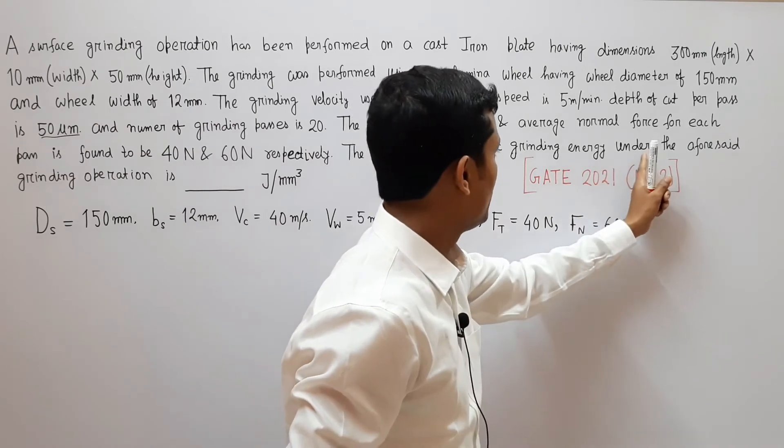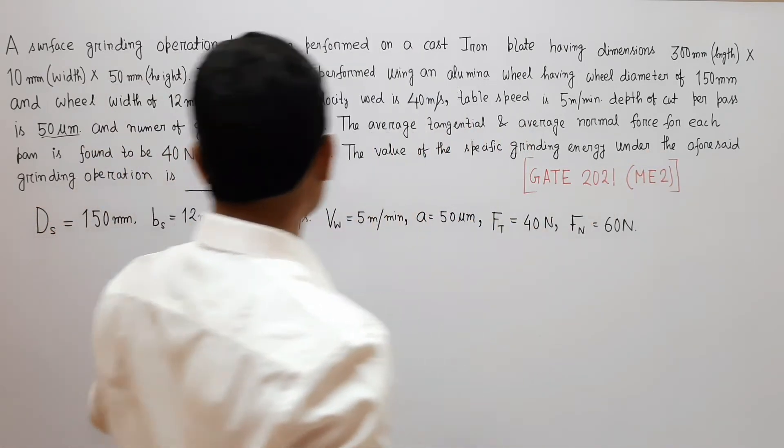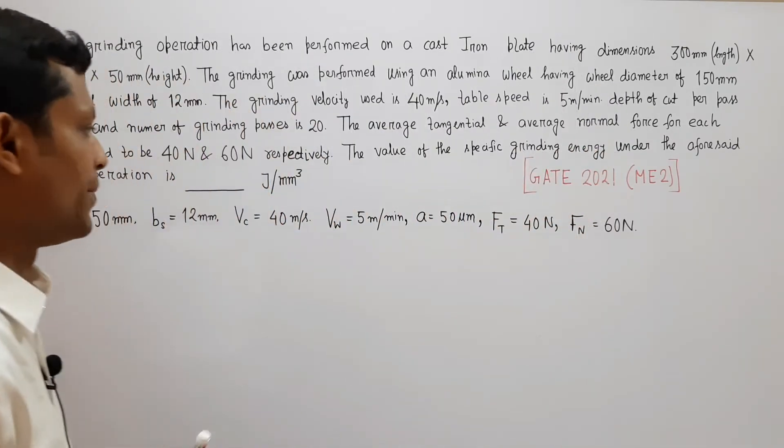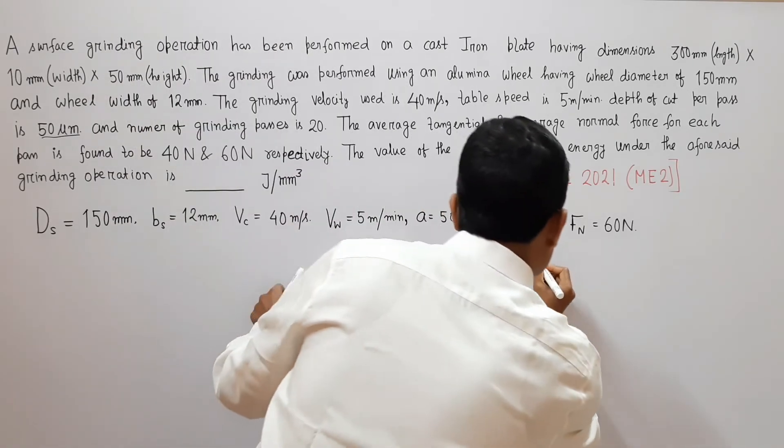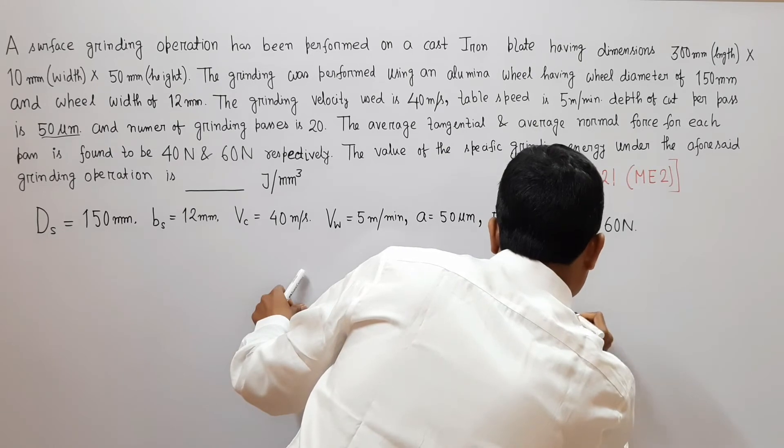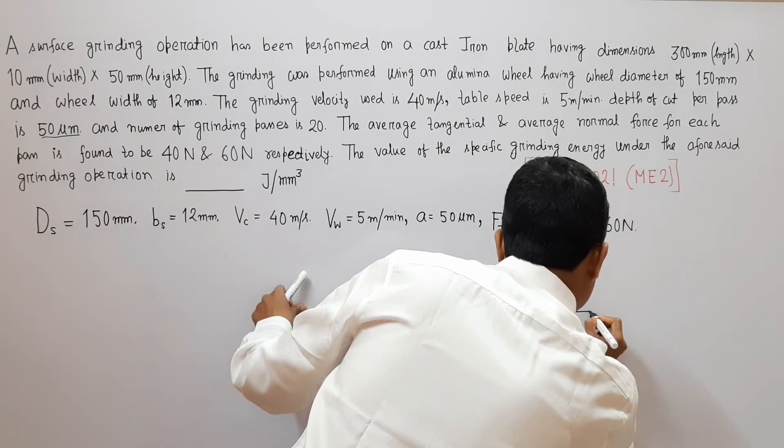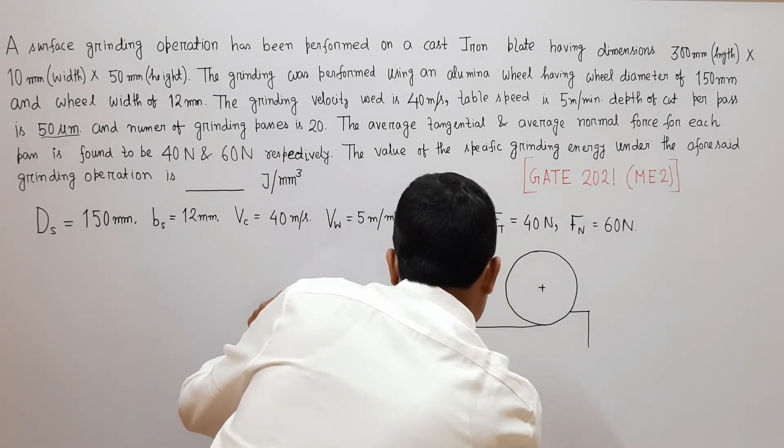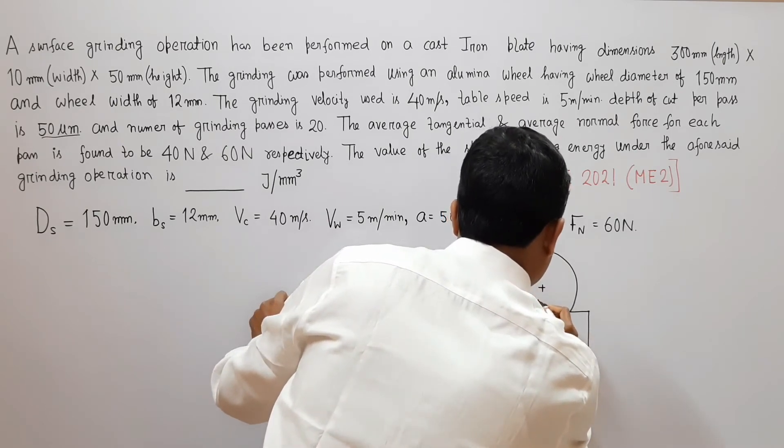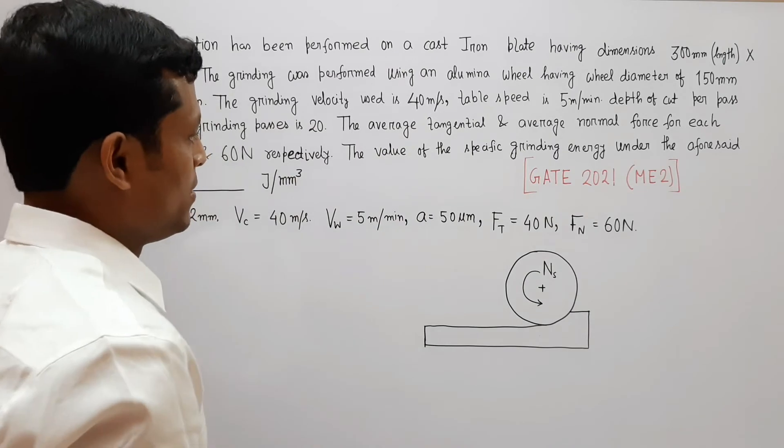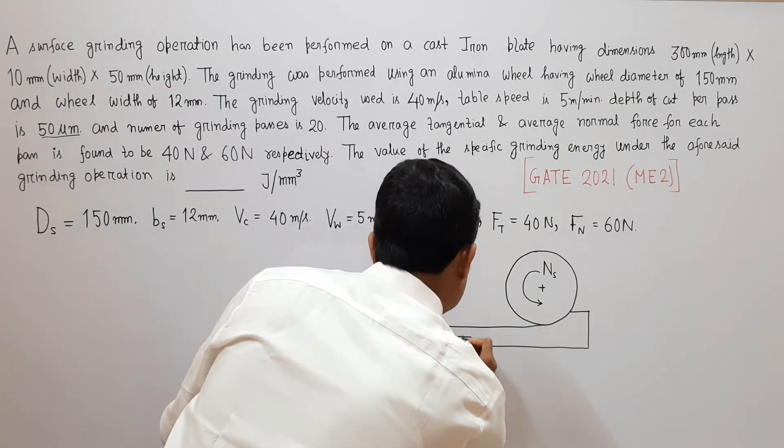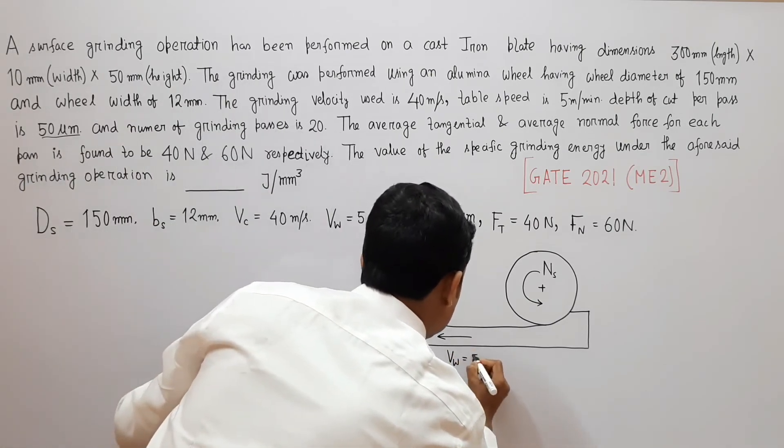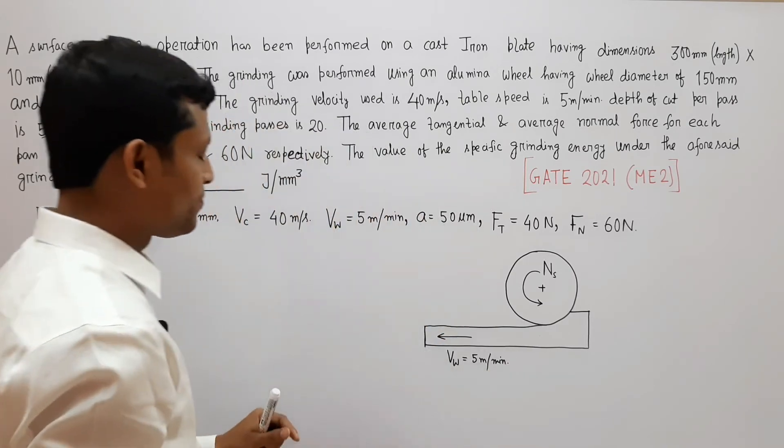So tangential force Ft is 40 newton and normal force is 60 newton respectively. The value of the specific grinding energy under the aforesaid grinding operation is to be determined in terms of joule per millimeter cube. So before solving this problem, let me draw a schematic diagram of this grinding process.